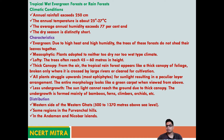The annual humidity is around 77 percent and the dry season is distinctly short. This type of vegetation is found on the western side of the Western Ghats and northwest India. The trees are lofty, often reaching 45 to 60 meters in height, forming a thick canopy. From the air, the tropical rainforest appears like a thick canopy, broken only where rivers cross through.